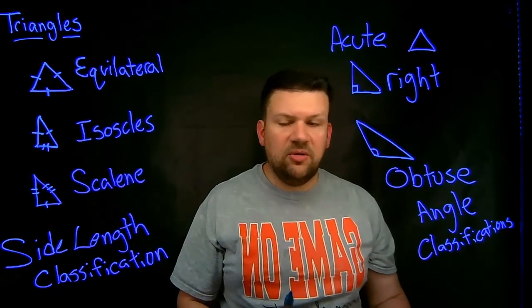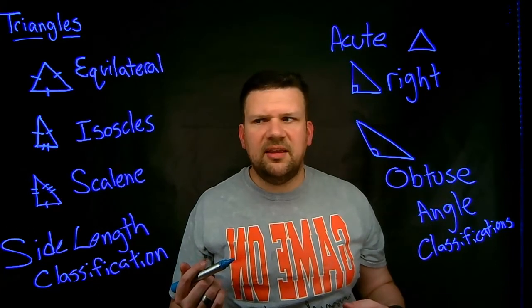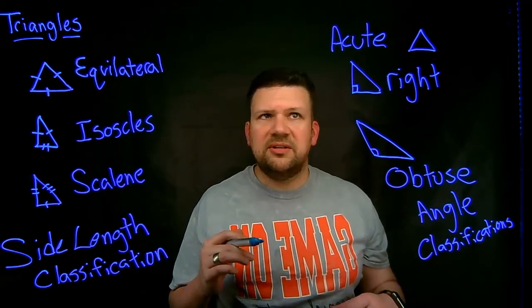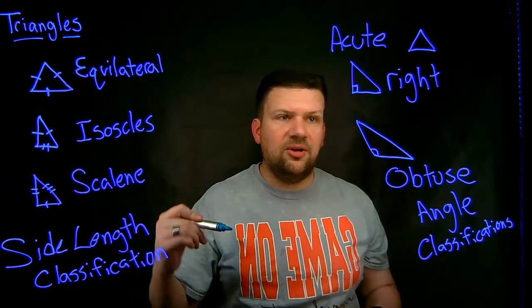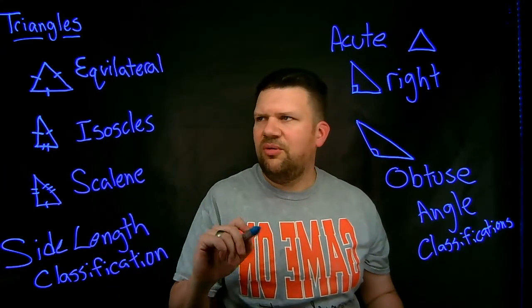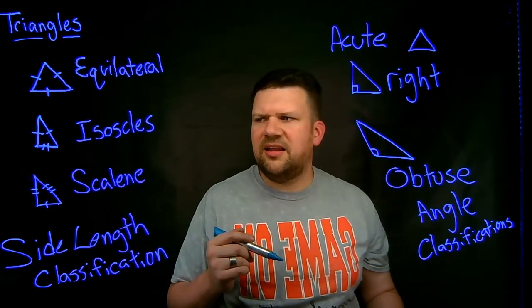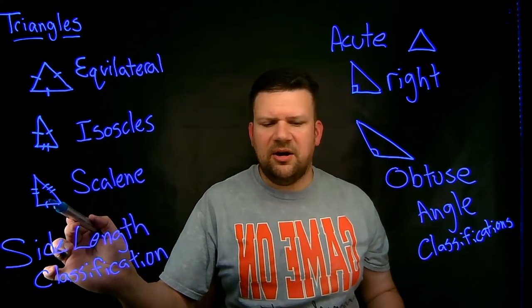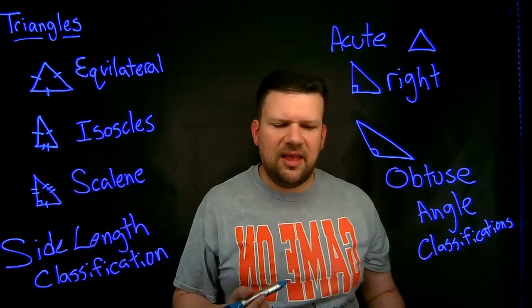As we start to look more at these triangles, review them a little bit more, you'll get to where you can see a triangle and say, well, this one is not just an equilateral triangle, it's an acute equilateral triangle because all the sides are the same length and all the angles are less than 90 degrees. This one right here, if I put a little box down in the corner, then it would be a right scalene triangle.